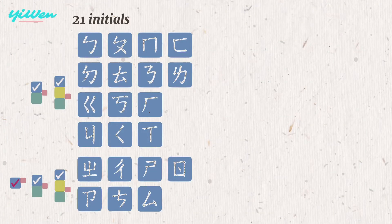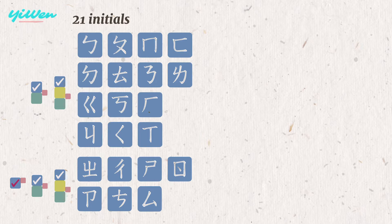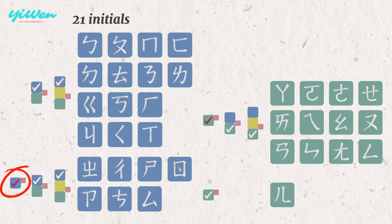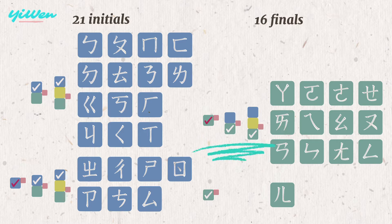Here are the 21 initials and where the symbols would be positioned. As mentioned, the initials are at the upper part, but some initials can appear alone. The remaining symbols are 16 finals, which actually contain three unique symbols — we'll talk about those later. Normal finals can appear alone and at the bottom.